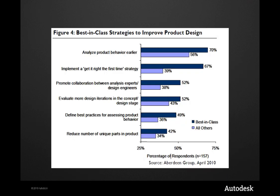The biggest driver to improve the design process is reducing cost. Remember that much of the final cost of a product is determined by the decisions engineering makes during the design phase. 73% of best-in-class manufacturers use digital prototypes in their design process to predict product performance. Analyzing the product behavior earlier with simulation is how you know you're making the best decisions, way before you need to build physical prototypes.